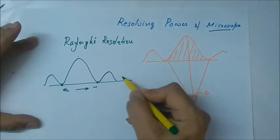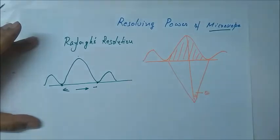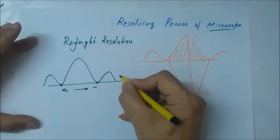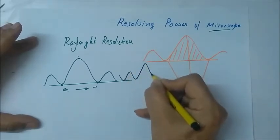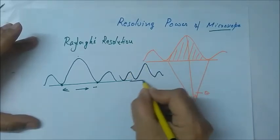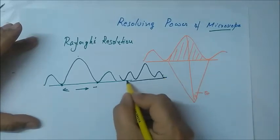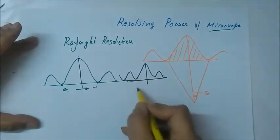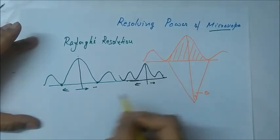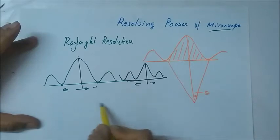If there are two objects forming two different images, this is the image of another object. Till this time these are separate, we can easily distinguish them and resolve them.